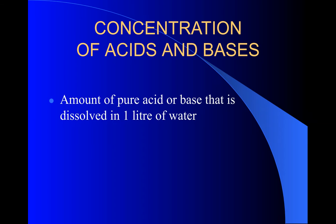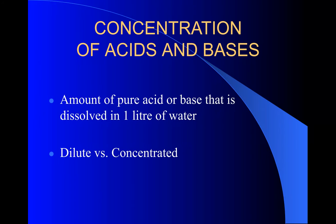Let's talk a little bit about the concentrations of acids and bases. The amount of the substance in a liter of water is basically how the acidity or baseness of a substance is measured. An acid that is dilute would mean there are fewer hydrogen protons per liter of water, versus an acid that is concentrated, meaning there are a lot of hydrogen protons per every water molecule in a liter of water.